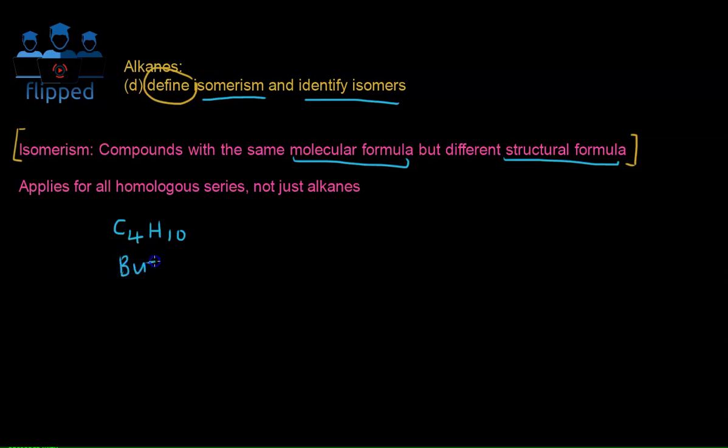In our previous video, we taught you to draw butane. Based on the number of carbons, you just link them up, and the remaining space you fill with hydrogens. One, two, three, four, five, six, seven, eight, nine, ten hydrogens, four carbons. So this is butane.